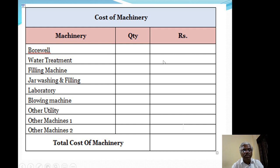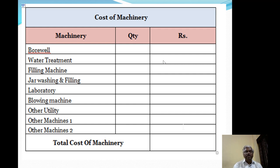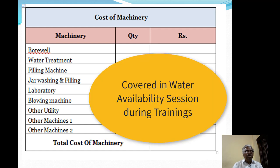For the borewell, you need to understand how much water you require. From our example, approximately 43,334 — roughly 44,000 — liters per day is the raw water needed. When testing the water, you should also check water availability. You can send your water sample to us for TDS testing and plant recommendation; this is a chargeable service.